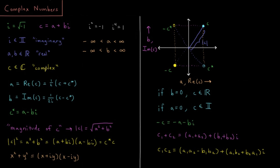These numbers are all what we call complex, sometimes indicated by a C with an extra vertical line inside the loop. We can define the real and imaginary parts in terms of the entire number. The real component of c is a, which equals one half times the complex number plus its complex conjugate. The complex conjugate is indicated by an asterisk and is defined by switching the sign on the imaginary part — so if c is a plus bi, then c* is a minus bi. The imaginary part b equals 1 over 2i times c minus its complex conjugate.